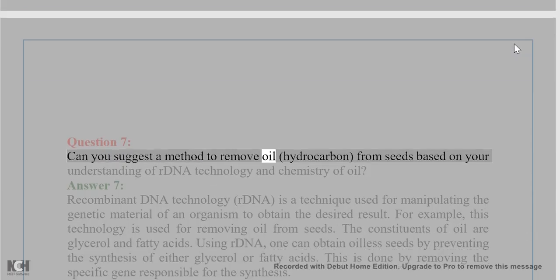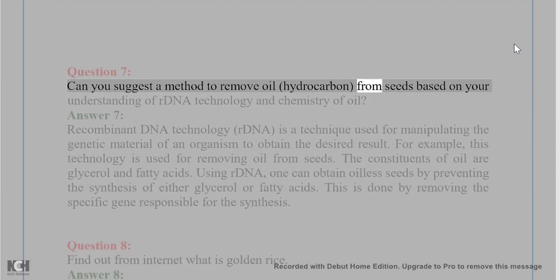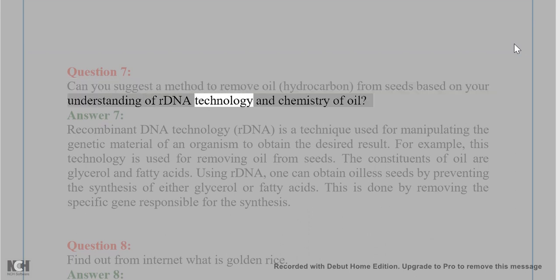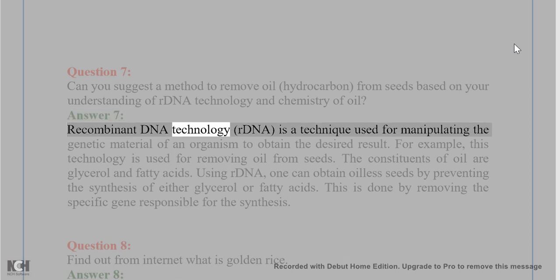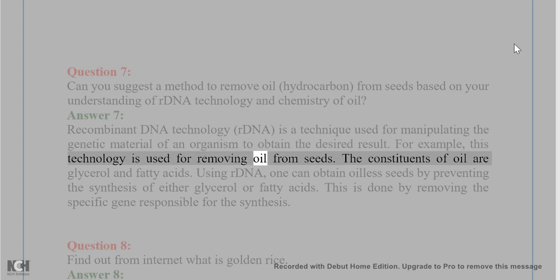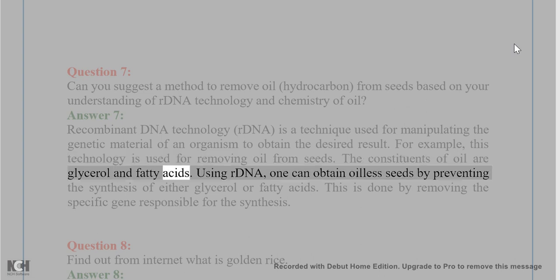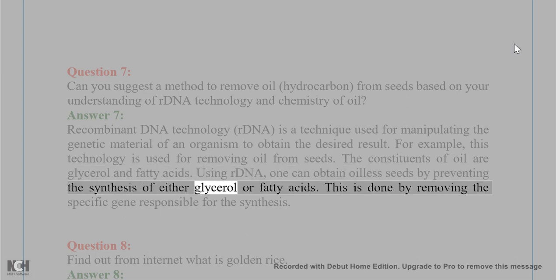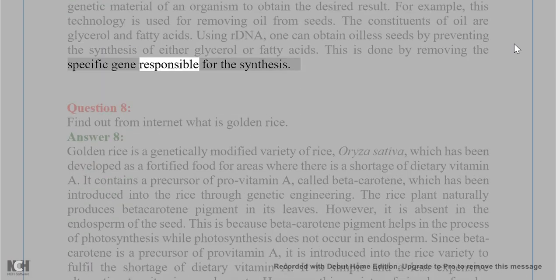Question 7. Can you suggest a method to remove oil (hydrocarbon) from seeds based on your understanding of rDNA technology and chemistry of oil? Answer 7. Recombinant DNA (rDNA) technology is a technique used for manipulating the genetic material of an organism to obtain the desired result. This technology is used for removing oil from seeds. The constituents of oil are glycerol and fatty acids. Using rDNA, one can obtain oil-less seeds by preventing the synthesis of either glycerol or fatty acids. This is done by removing the specific gene responsible for the synthesis.